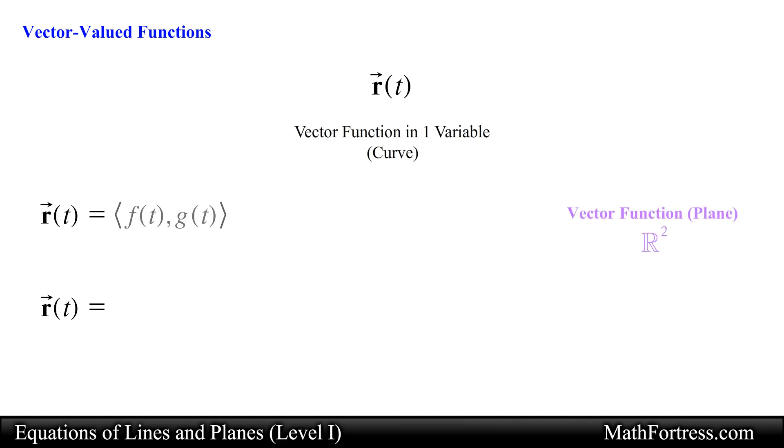a vector function in R squared can be written as follows. And a vector function in R cubed can be written like this. Here every number t in the domain of R generates a unique vector in R squared or R cubed. For the vector function in R squared, f of t and g of t are the components of the vector R of t, where f and g are real-valued functions called the component functions of vector R.